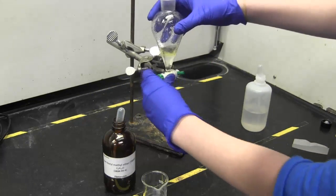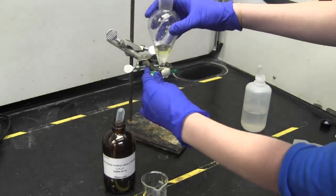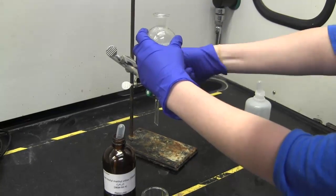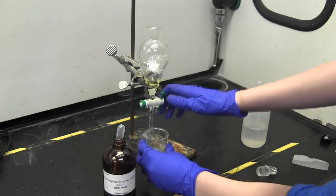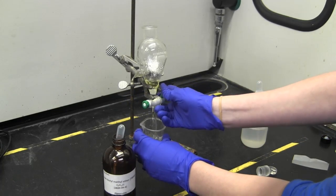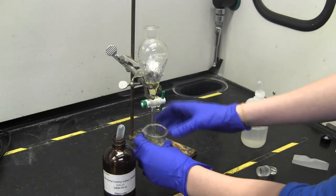Return it to an upright position and take the stopper off of the top. Then allow the layers to separate and open the stopcock slowly to allow the bottom layer to fall into the beaker below. Close the stopcock and repeat until you have reached the desired amount of washes.